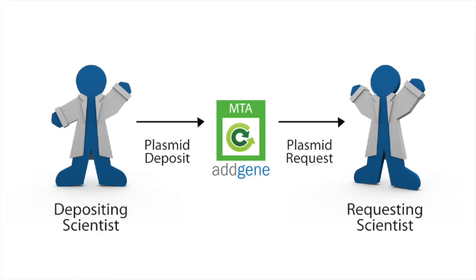After you place your order with Addgene, you will need to complete a recipient scientist acknowledgement, and then have your institution sign the MTA before we can prepare your order. We have streamlined this process, and we'll walk you through each step to make it quick and easy.